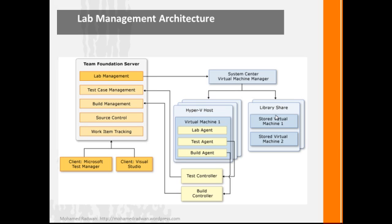The Hyper-V host has many virtual machines and a library share that has templates you can use to create your environments. In the library you can see stored virtual machine 1, stored virtual machine 2 — you use your library to store templates so you can create virtual machines from them, or store your environments. The Hyper-V machines have virtual machines with lab agents installed, and these agents work with the test controller.